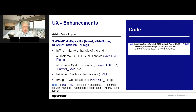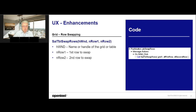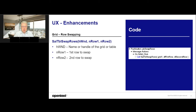We have also implemented row swapping inside the grid. The function 'sal_table_swap_rows' gives you the possibility to swap rows inside a grid. For example, you can swap the first row with the second row. You pass in the name of the grid or table window — it's also possible to swap rows inside a table window. You pass in the first row and the second row, and they are swapped inside the visible area of your grid or table window.